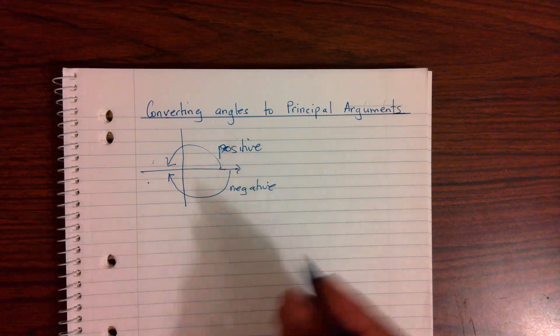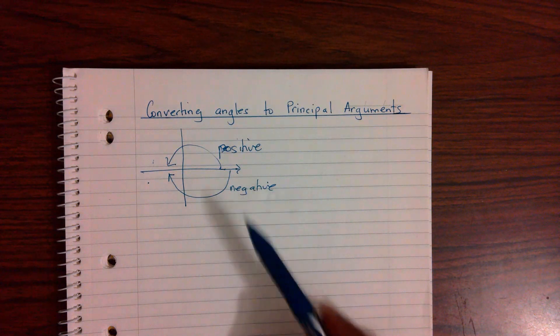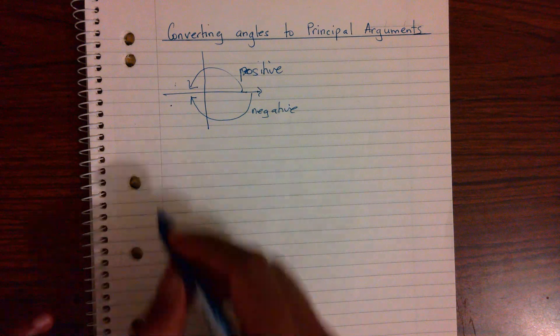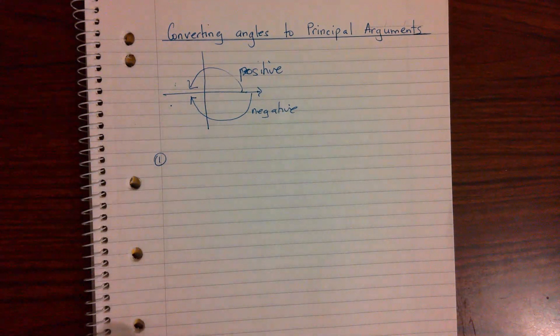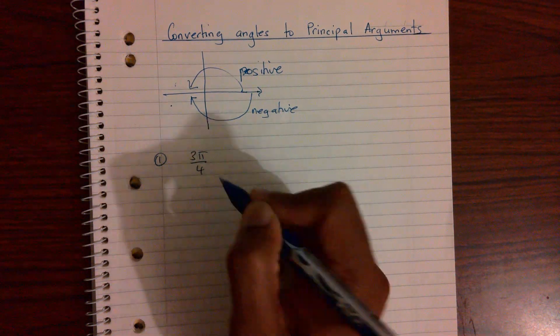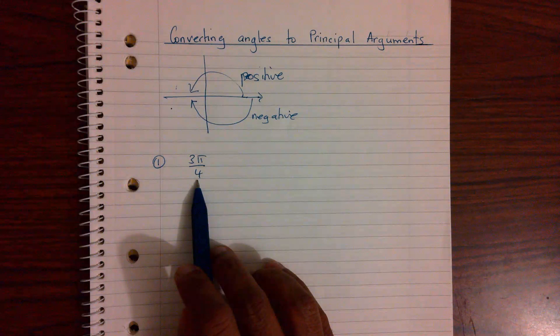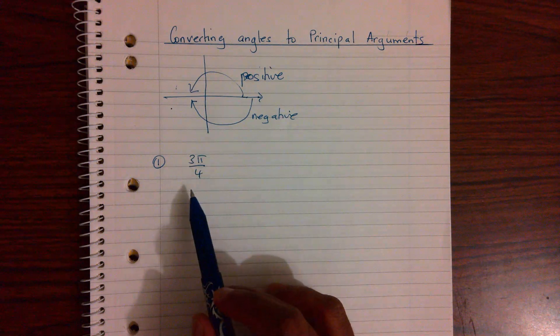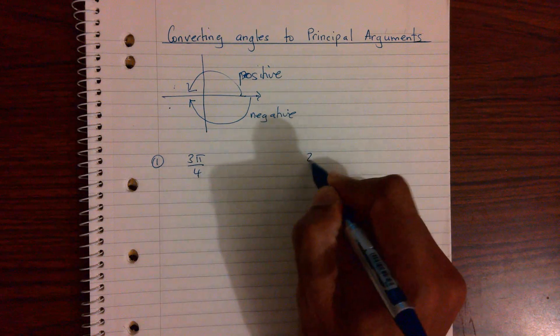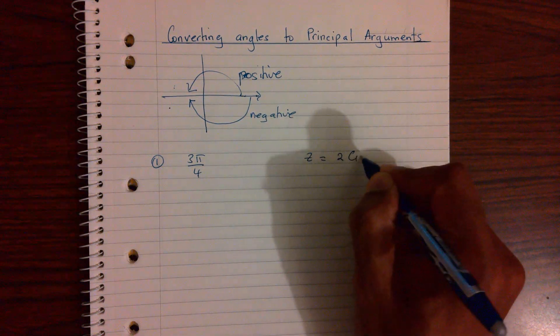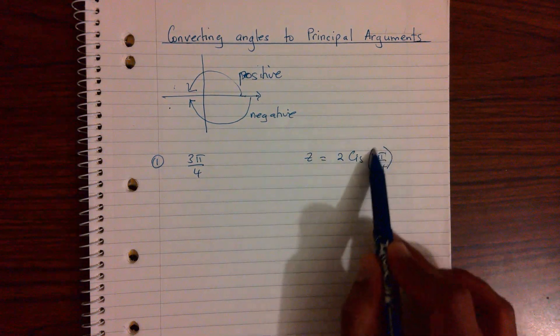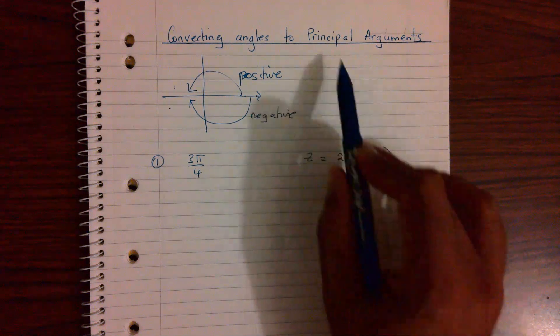So this assumes that you have some knowledge of this. We will attempt to do some questions and I think it's best to start with some examples. Suppose you've got 3π over 4. Now you've got to decide if that 3π over 4 is in its principal argument form or not. You could have a complex number z equal to 2cis 3π over 4, and you've got to decide if that is written in its proper conventions.